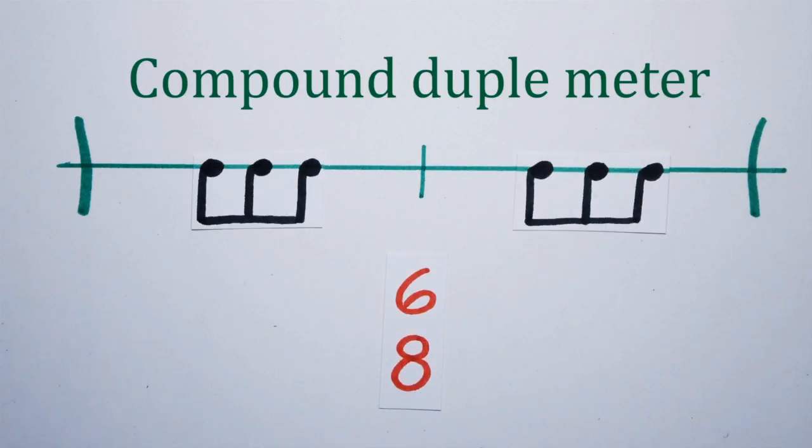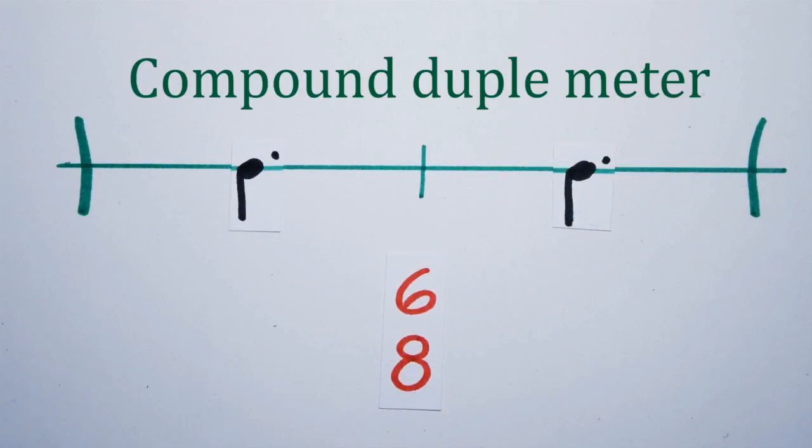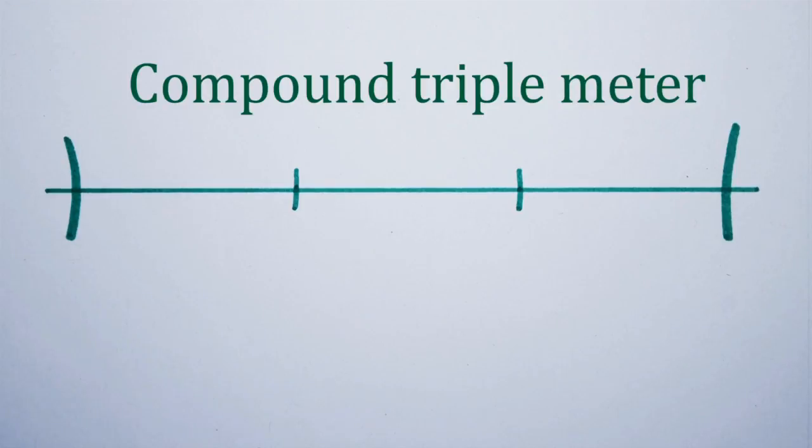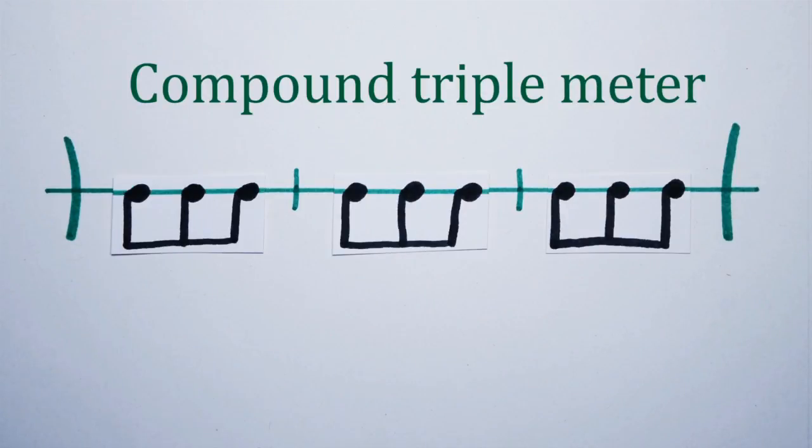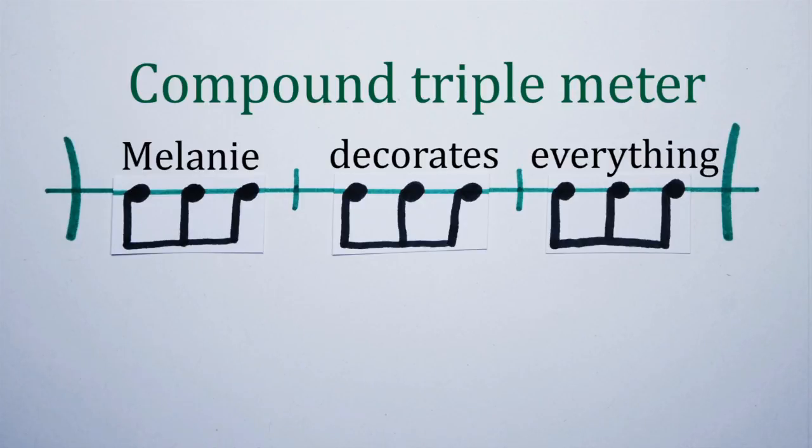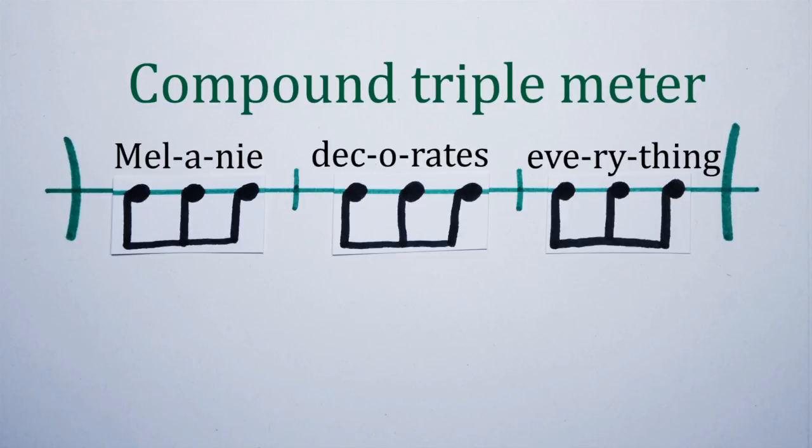If we go into compound triple meter, we have three beats per measure with a triple pulse per beat. Melanie decorates everything. We have three words giving us three beats with three pulses per beat. In total, we get nine pulses per measure.